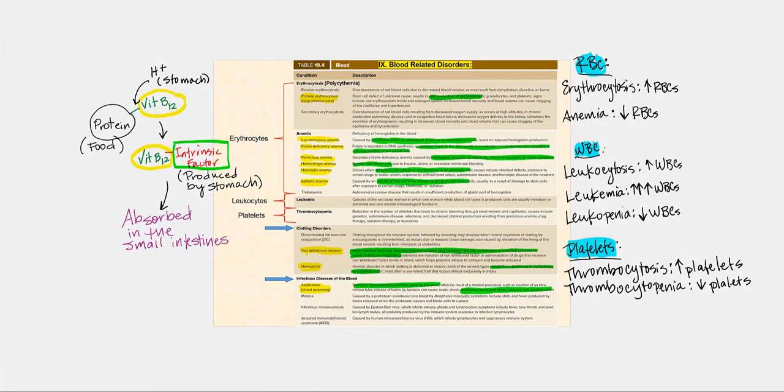Let's now talk about some of the blood-related disorders beginning with the red blood cells. Anytime we have elevated numbers of red blood cells where we have a high hematocrit, that is referred to as erythrocytosis.